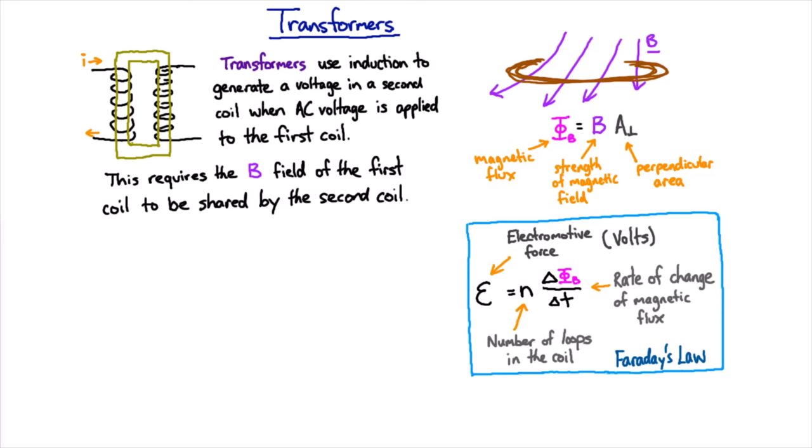Conversely, if you want to make a very large voltage, it turns out that it's much easier to transport electricity long distances efficiently at high voltage. And so what you want is a step-up transformer, so you want a large number of loops in the second coil, and that means that the voltage going out will be much greater than the voltage coming in.